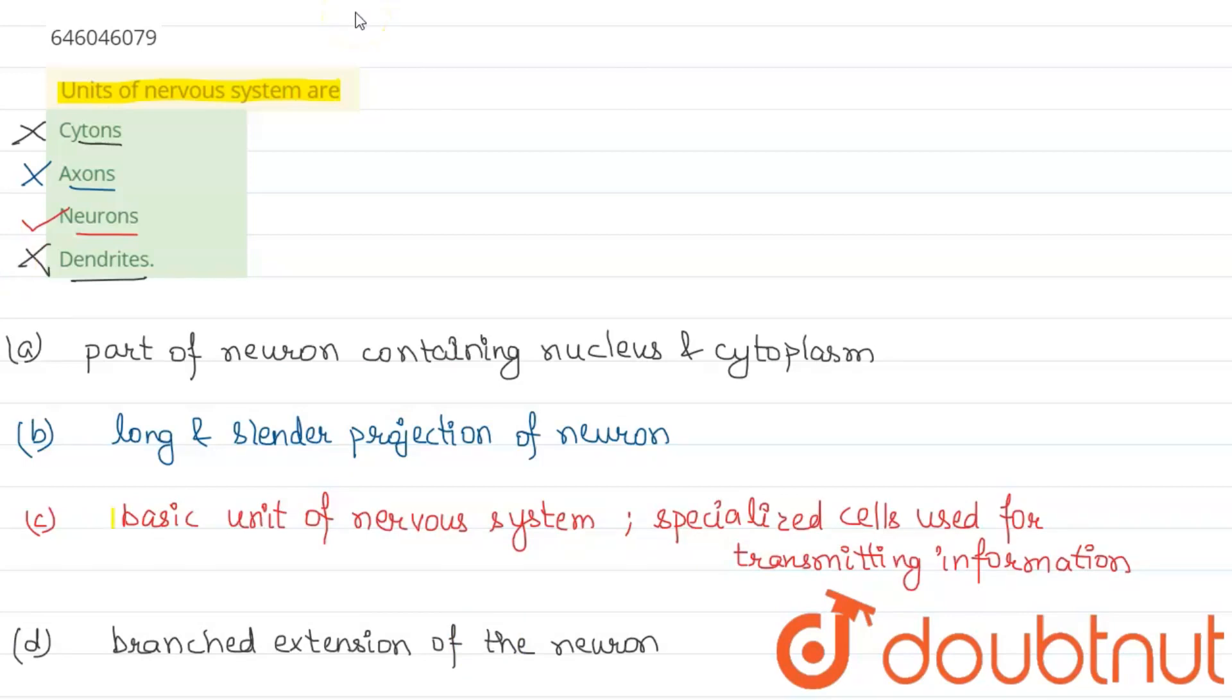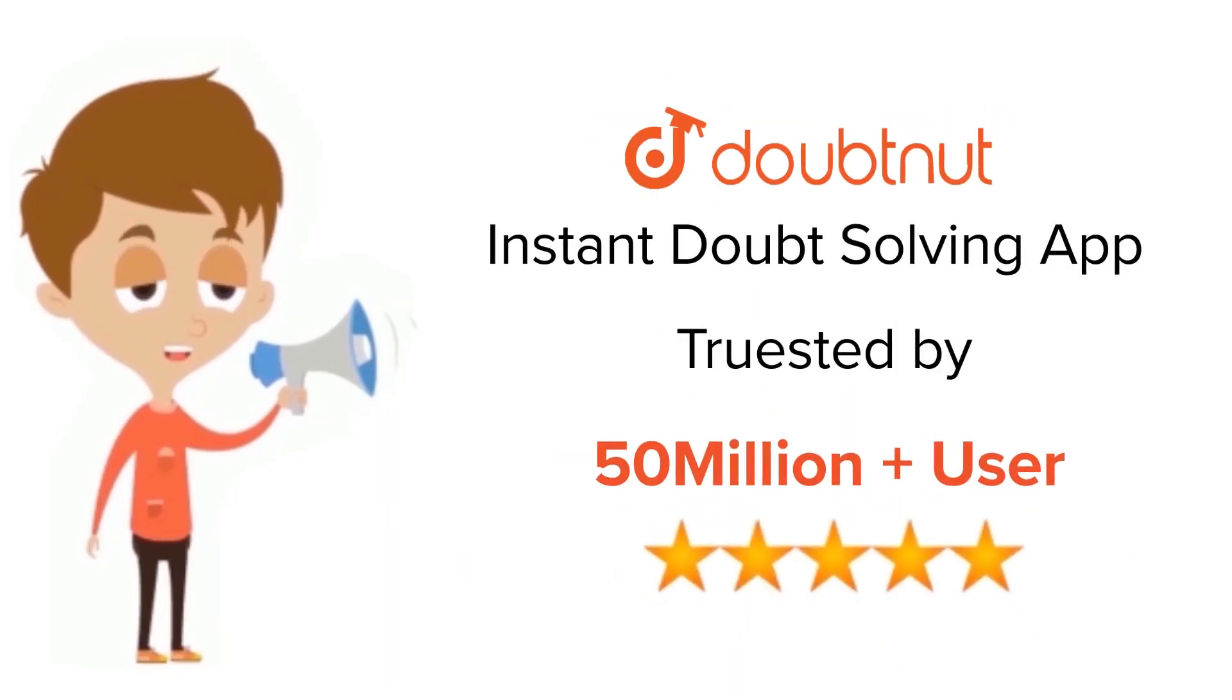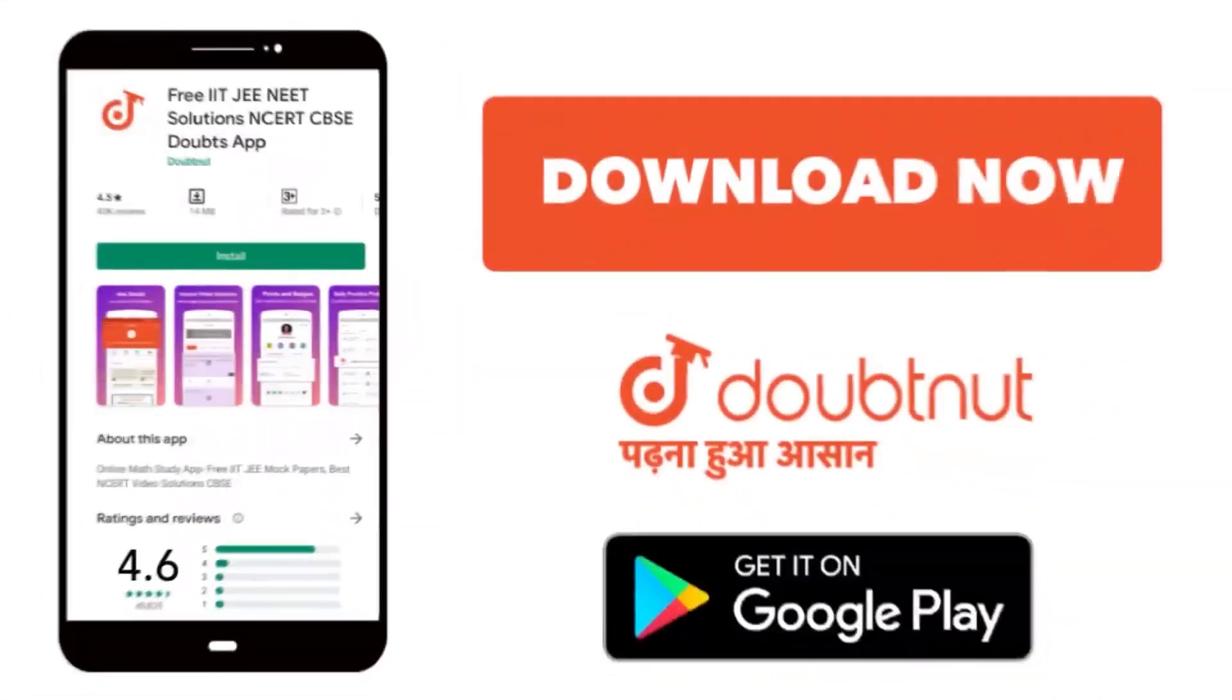Hence we have the final answer as units of nervous system are neurons. For Class 6 to 12, IIT-JEE and NEET Level, trusted by more than 5 crore students, download Doubtnet app today.